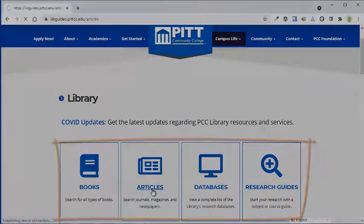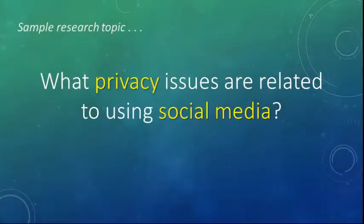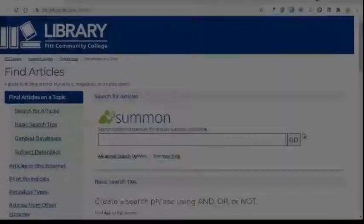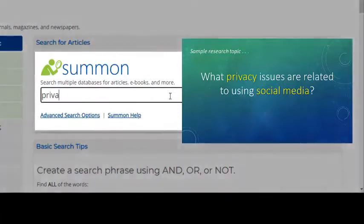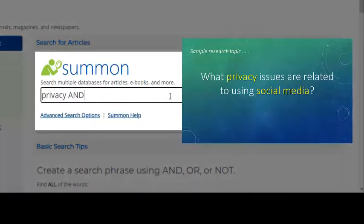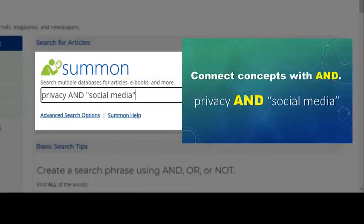Let's look for online library resources that talk about privacy issues related to using social media. To search Summon, start by typing keywords or phrases into the Summon search box. In this case, I'm going to simply type the word privacy and the phrase social media connected by the word and.